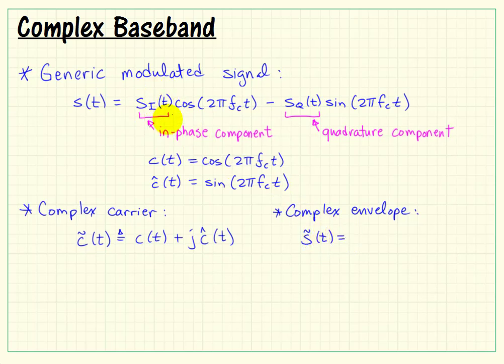So we then call the complex envelope S tilde of T. And this is, again, formed by looking at the in-phase and the quadrature components of our modulated signal. And the diamond above the equals is indicating a definition for each of these.